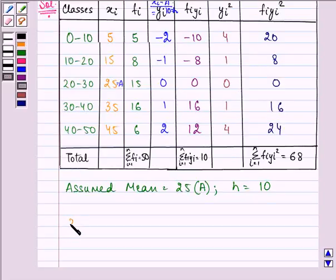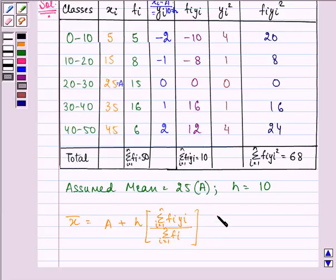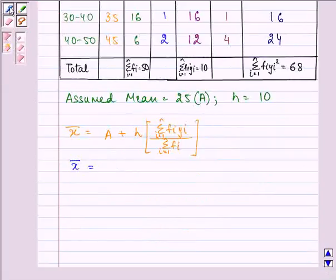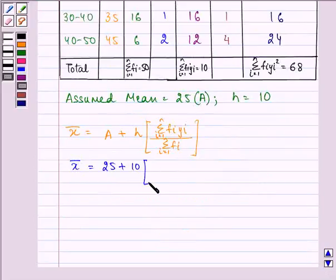Now to find out the mean we have the formula as A plus h into summation fi*yi divided by summation fi. On substituting we have the answer as mean is equal to 25, that is the assumed mean, plus 10 into summation fi*yi is 10 divided by 50. So we have the answer as 25 plus 2, that is 27.